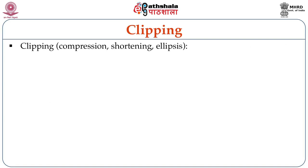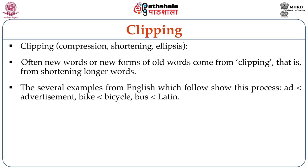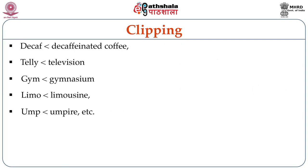The next type is clipping, meaning compression, shortening or ellipsis. Often new words or new forms of words come from clipping, that is from shortening longer words. There are several examples from English: 'bike' is from 'bicycle', 'bus' from 'omnibus', 'tele' from 'television', 'gym' from 'gymnasium', 'limo' from 'limousine', etc. The short forms are generally preferred compared to the longer ones.